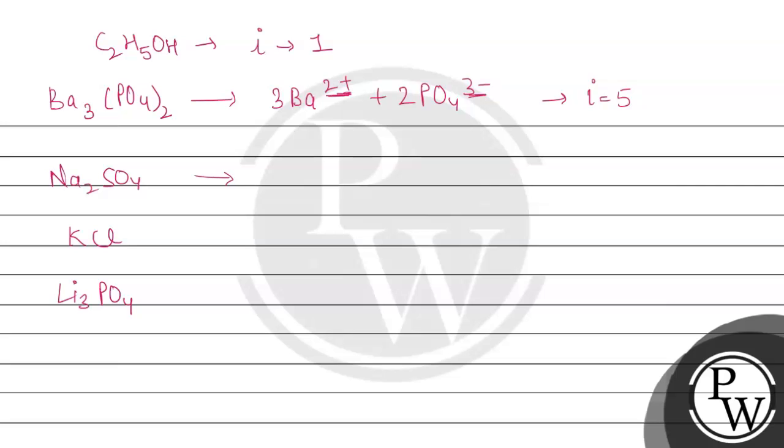Na2SO4 dissociates to form 2 Na+ plus SO4 2-, so the iota value will be 3. KCl dissociates to give K+ and Cl-, so the iota value will be 2.